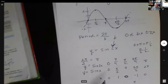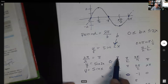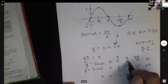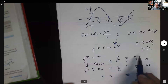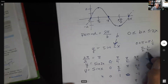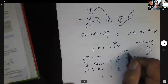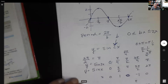Let's verify the pattern — looking at numerators: zero, one, two, three, four — all over four. So zero, pi over four, two pi over four which is pi over two, three pi over four, and four pi over four which is pi. Those are your four divisions for y equals sine 2x.